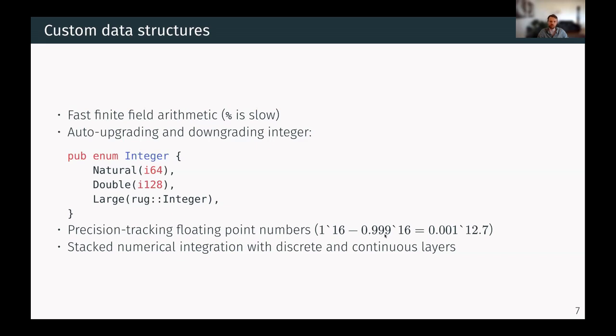if you subtract 0.99 with 16 digits precision from it, in the end you'll only be left with 12.7 decimal digits of precision. It also has some more advanced stuff with numerical integration. This is something we can look at during the tutorial later today.